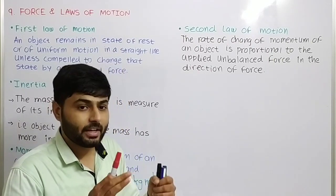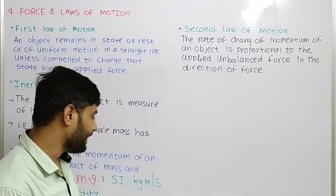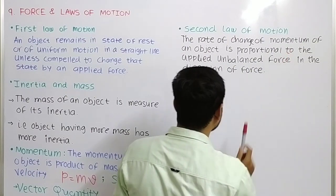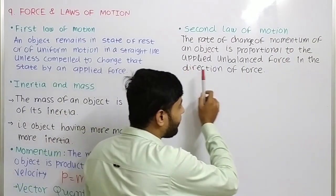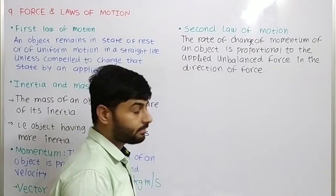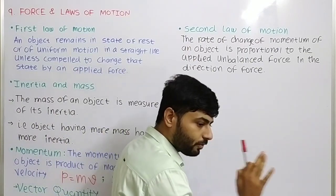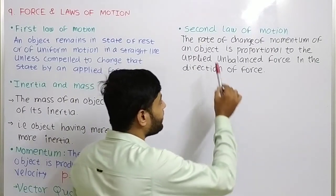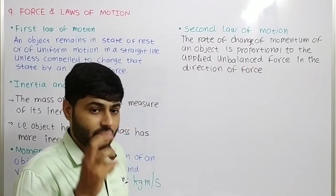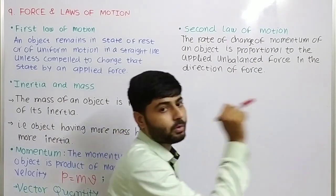Let's see the statement of the second law of motion: The rate of change of momentum of an object is proportional to the applied unbalanced force in the direction of the force. So we have three things here: the rate of change of momentum, which equals the unbalanced force, and the direction — which is in the direction of the force applied on the object.